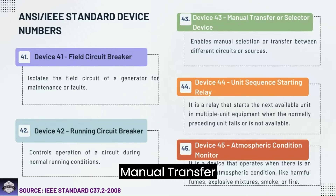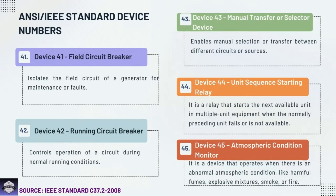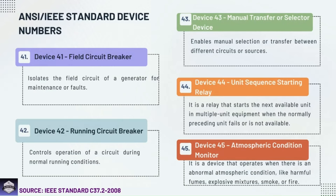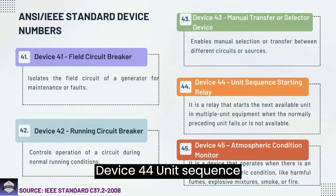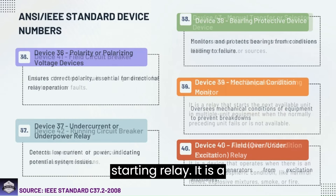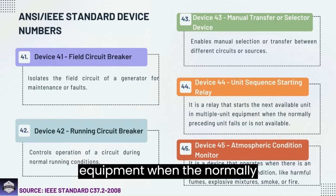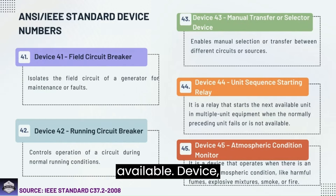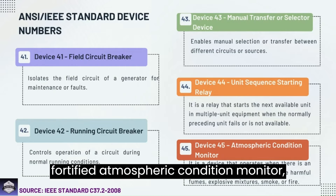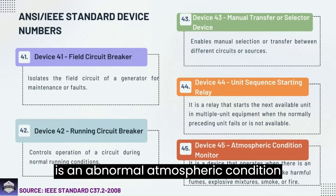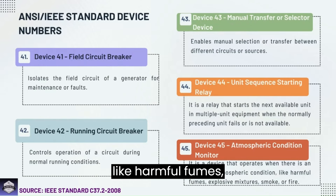Device 43: Manual transfer selector device — enables manual selection or transfer between different circuits or sources. Device 44: Unit sequence starting relay — a relay that starts the next available unit in multiple unit equipment when the normally preceding unit fails or is not available. Device 45: Atmospheric condition monitor — operates when there is an abnormal atmospheric condition like harmful fumes, explosive mixtures, smoke, or fire.